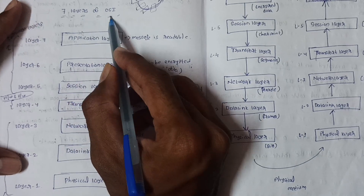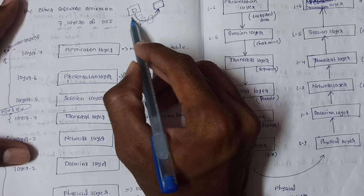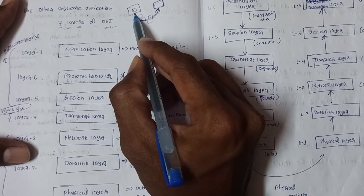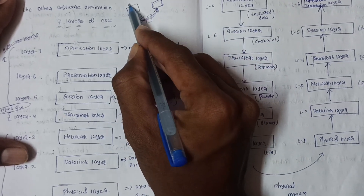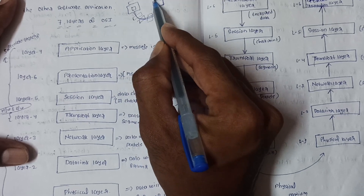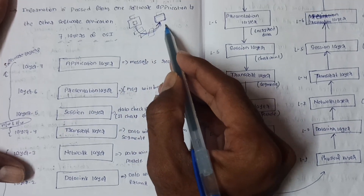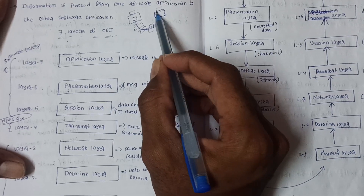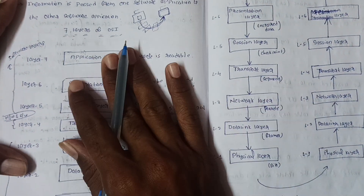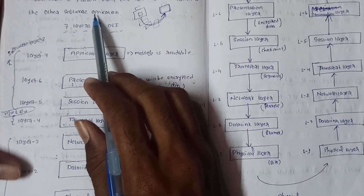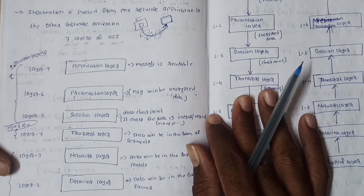Looking at the seven layers of the OSI model — consider your message, for example a WhatsApp message or an Instagram message. The sender sends the message and the receiver receives the message. Information is passed from one software application to another.